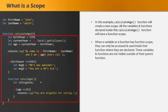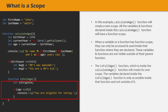When a variable or function has function scope, they can only be accessed and used inside the function where they are declared, and they are not visible outside of their parent function. The isFullAge function created inside calculateAge will also create its own scope. Whatever variables and functions we create inside isFullAge will only be accessible inside that function. In this example, the variable isEligible is created inside isFullAge, so it can only be accessed and used inside that function. This is called function scope.